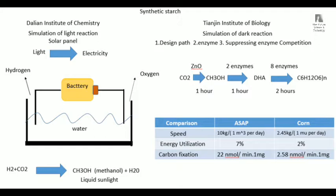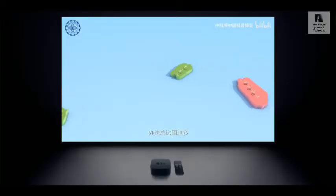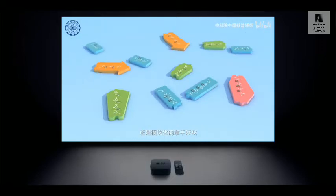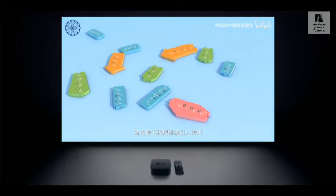With artificial synthesis, calculated based on the reaction tank volume and a 4-hour reaction time: if the reaction tank is one cubic meter and runs continuously for 24 hours a day, it produces about 10 kilograms of starch. Corn yield is about 420 kilograms per mu (approximately 1/15 of a hectare) over 120 days, with a starch content of about 70%. This works out to about 2,450 grams of starch per mu per day. So a one-cubic-meter reaction tank is equivalent to the starch production of about 4 to 5 mu of corn.